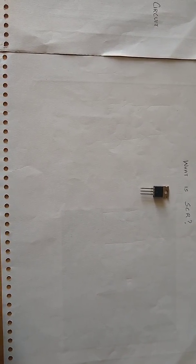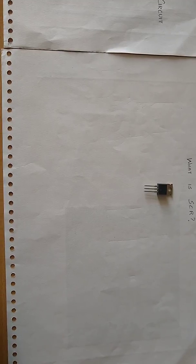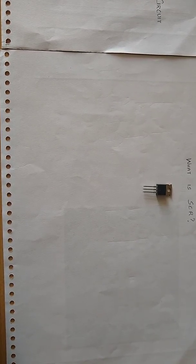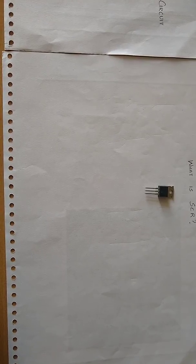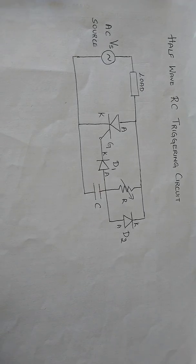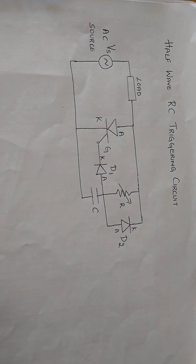Limited range of firing angle can be controlled by RC triggering circuit. RC triggering is having two types: RC half wave rectifier triggering and RC full wave rectifier trigger. The figure shows the circuit diagram of half wave RC triggering circuit.